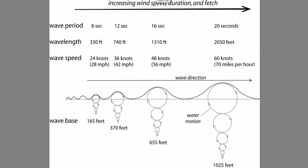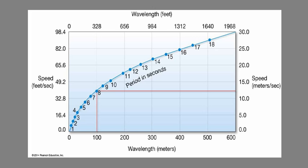That's useful to us because we can use any one of those variables to predict the other two. This applies to deep water waves — waves out in water deeper than their wave base that are moving independently of the ocean floor. For example, a deep water swell with an eight-second period translates to a wavelength of 100 meters (about 330 feet) and a speed of about 12 or 13 meters per second, or about 40 feet per second.